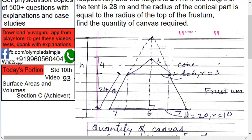Quantity of canvas equals surface area of frustum plus surface area of cone. Look at this image - it gives many hints. The diameter is 6 at the top and 20 at the bottom. If you bring the diameter from the top, it will be 6 here and the remaining will be 20 minus 6, that is 14.